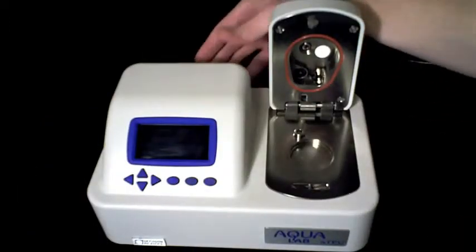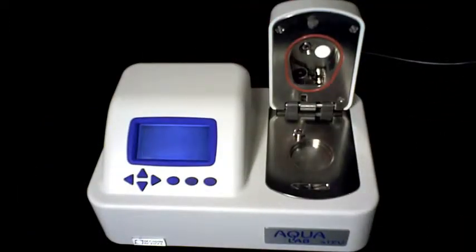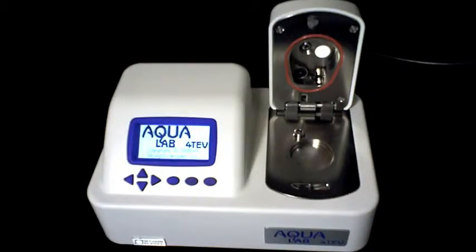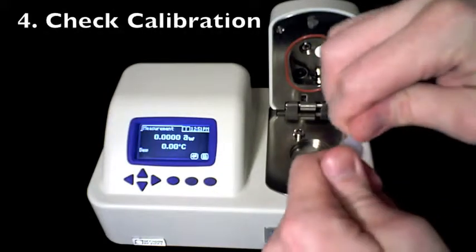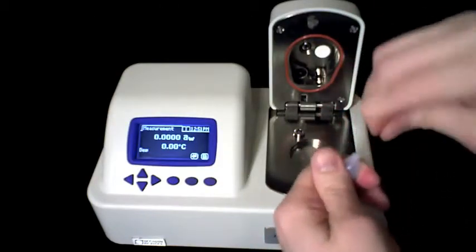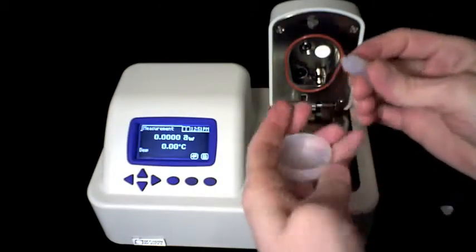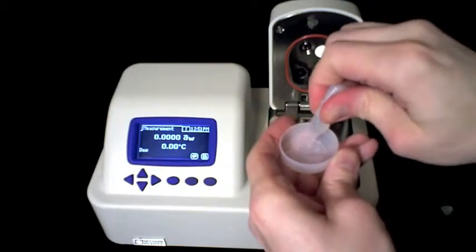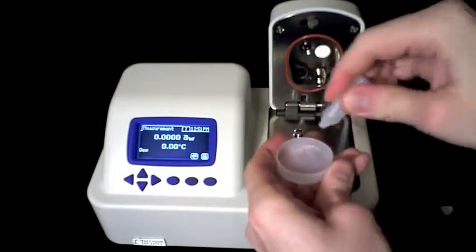After the cleaning process, it's important to verify that your instrument is operating properly. First, power your Aqualab back on. Then, take one vial of verification standards and put it in a sample cup. Place the sample cup inside the instrument, and close the lid.